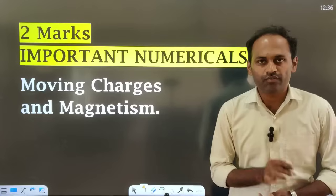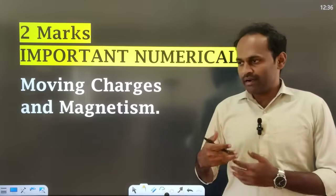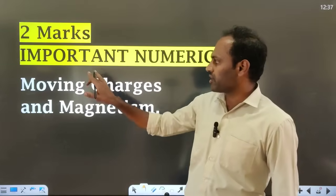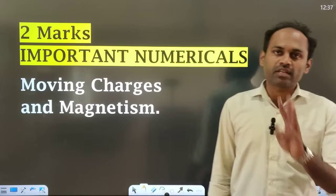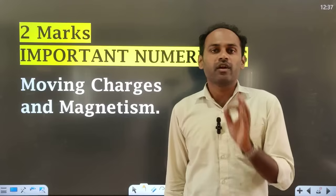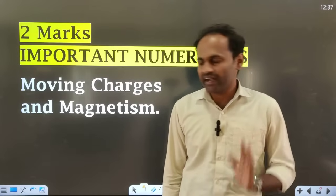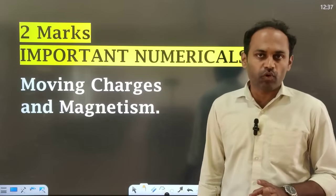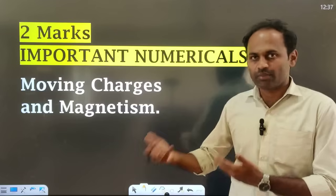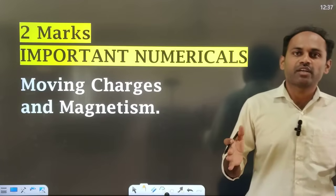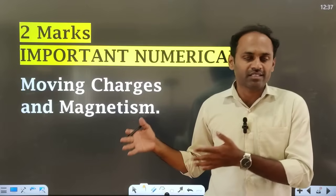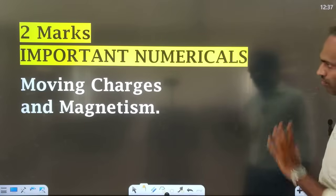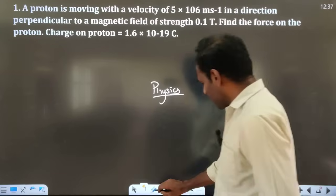Hello students, welcome to your channel Parivartan Physics. In the morning video we saw two-mark important numericals from electromagnetic induction. In this video we will see two-mark important numericals from moving charges and magnetism. In all three blueprints and all three model papers we have one two-mark numerical from moving charges and magnetism. I have chosen numericals from the question bank released by the board, plus some extra numericals from other books, to cover maximum possibilities. Without further delay, let us begin.